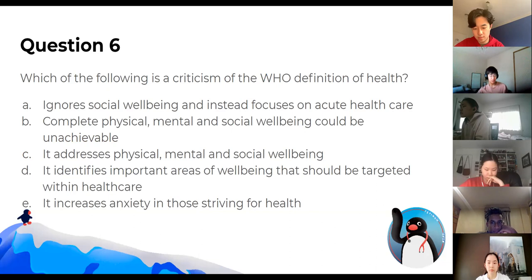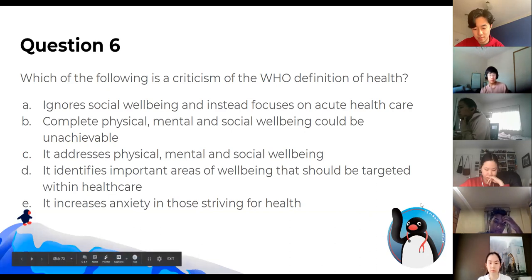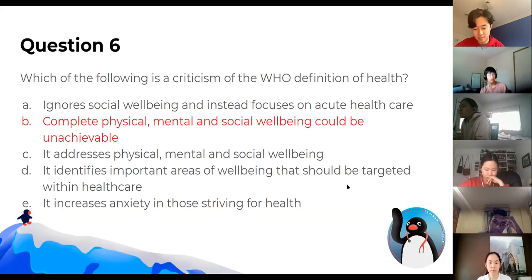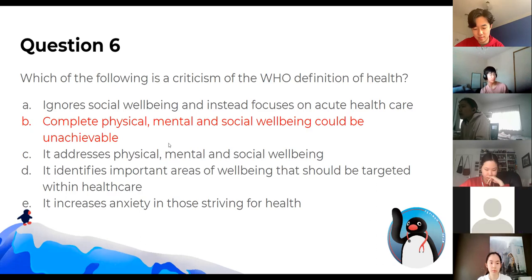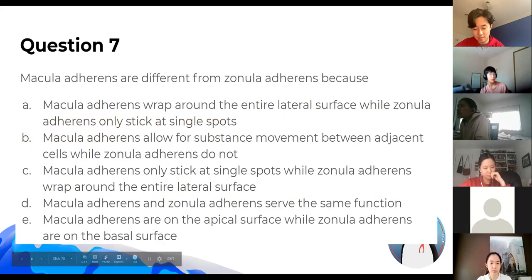Which is a criticism of the WHO definition of health? It's often unachievable — someone could be considered healthy even if they don't have an arm, for example. So the answer is B.